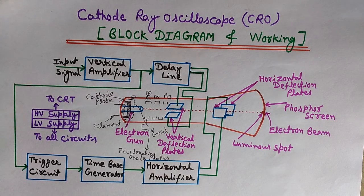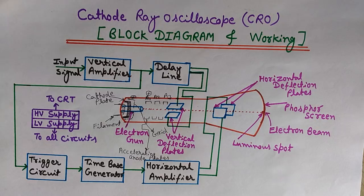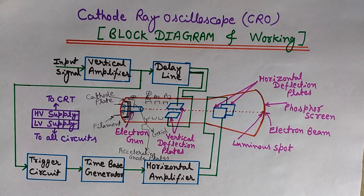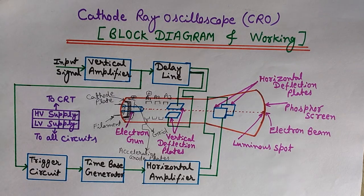Let's start with the applications of CRO. The CRO can be used for various purposes: to measure voltage, for measurement of current, for measuring phase and frequency of the signal, and also for analyzing the waveform of the signal in various ways.